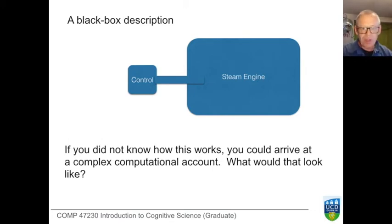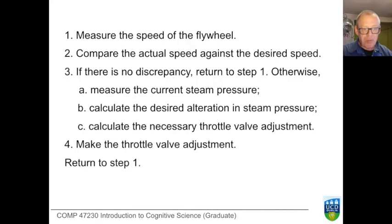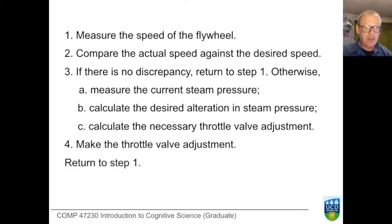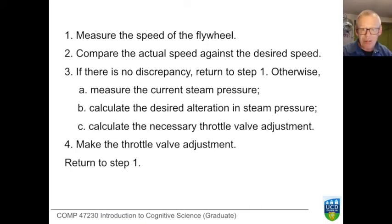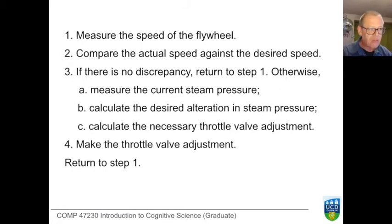We could come up with a task description for that control unit that would look something like this: measure the speed of the flywheel; compare the actual speed against the desired speed; if that's in order, fine — if not, measure the steam pressure; calculate the desired alteration to the steam pressure; adjust the valve; and go back to step one. It's a very simple algorithm, easily expressible in code. This is a computational solution, and it gives meaning to the job of the controller.